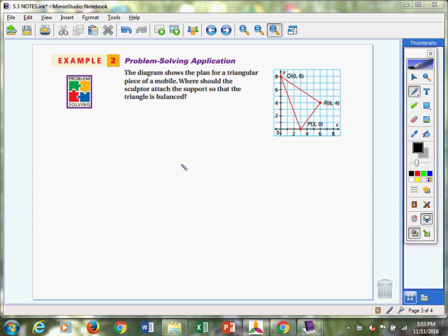We're actually going to apply some of our knowledge about the centroid theorem to this problem. The diagram shows the plan for a triangular piece of a mobile. Where should the sculptor attach the support so that the triangle is balanced?